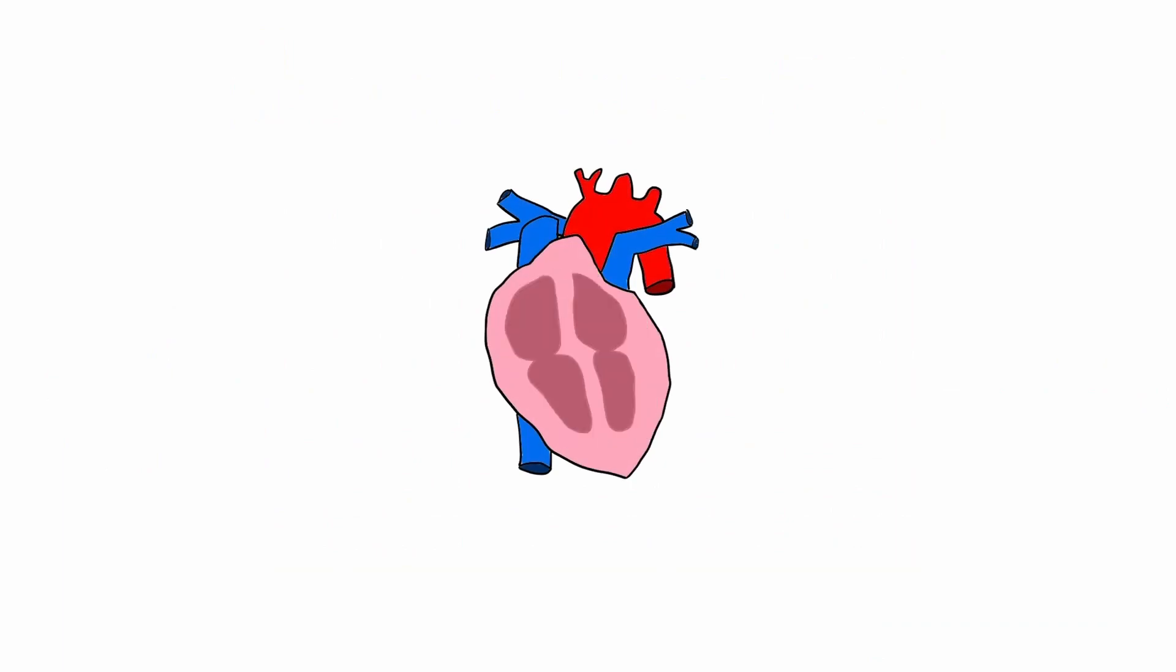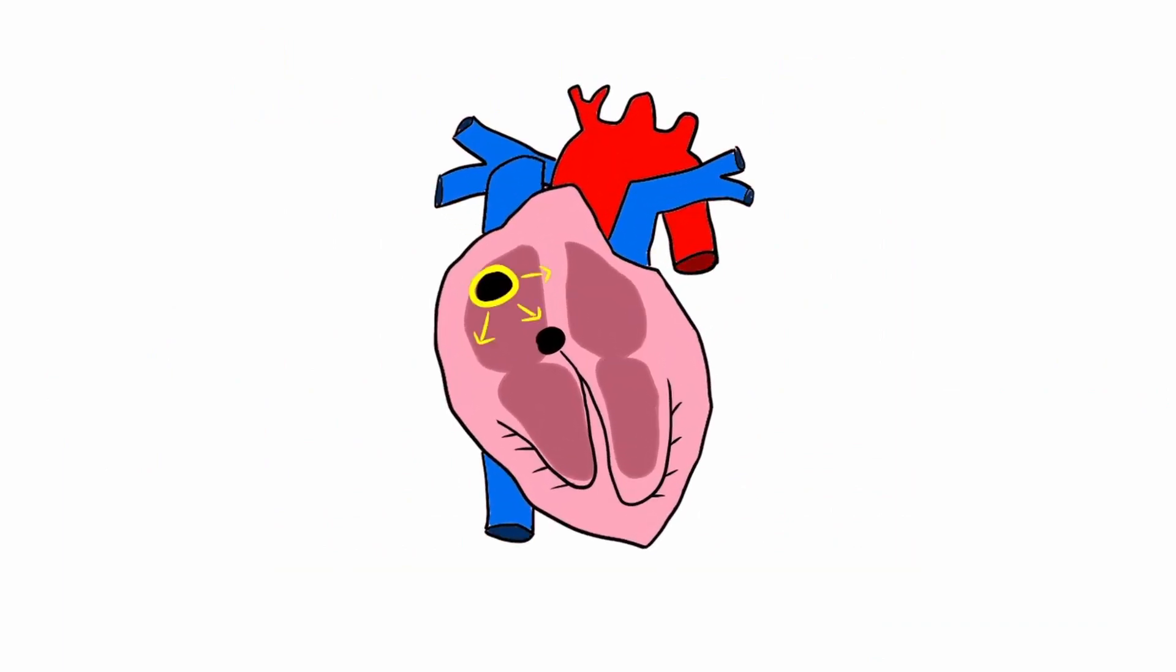The pulse of electrical activity that results in contraction of the heart originates in the sinoatrial node, which is found in the right atrium. The sinoatrial node, or SA node, sends out a wave of depolarization which spreads across the atrium and causes them to contract.